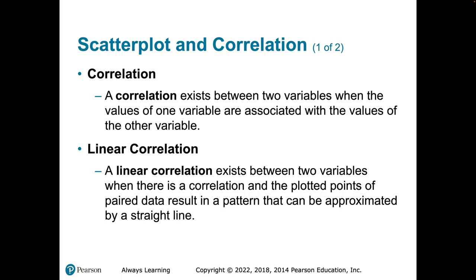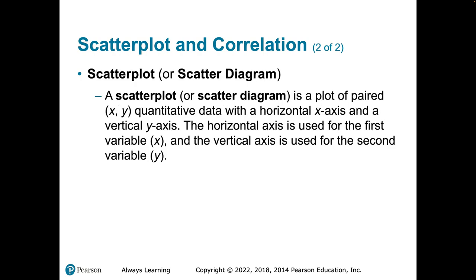A linear correlation is a specific type of correlation where the relationship or association between two variables is best explained by a linear model.